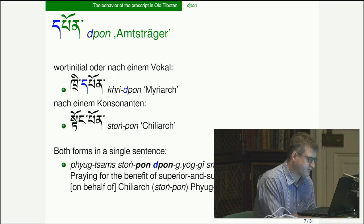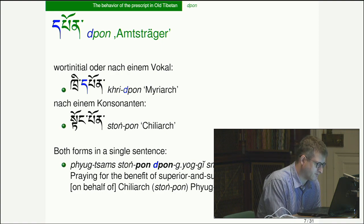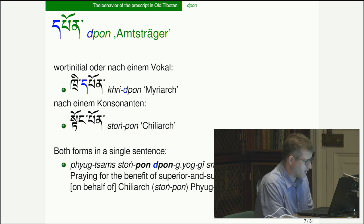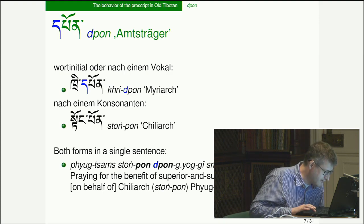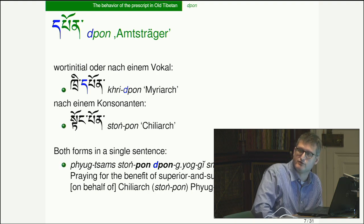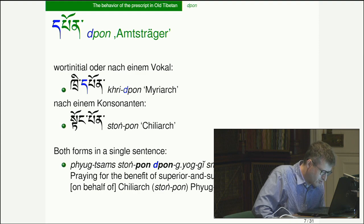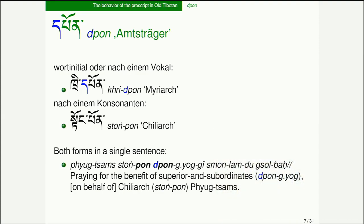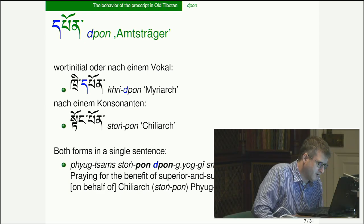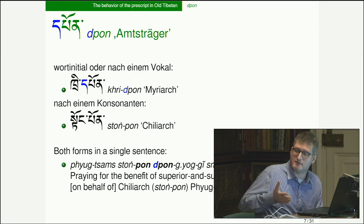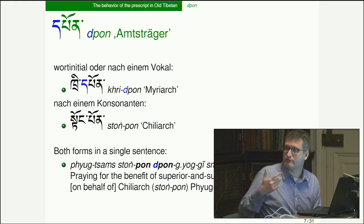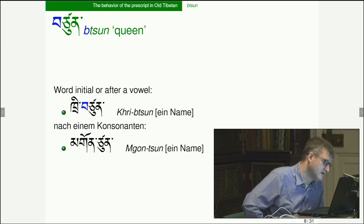When you have 'chiliarch' — an official who runs a thousand-unit in the army — 'tong-pun,' you delete the 'd' because it follows a consonant. We can see both forms in a single sentence: 'chuktsam tongpun punyokki munlamdu solwa' — prayers for the benefit of superiors and subordinates on behalf of the chiliarch. At the beginning of a word you keep the 'd,' but inside a word after a consonant you lose the 'd.'